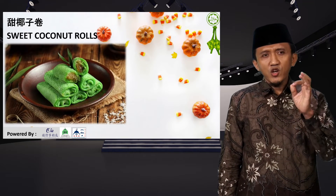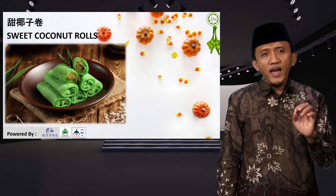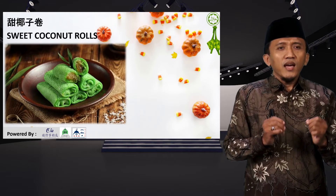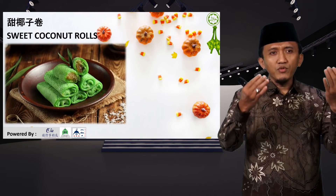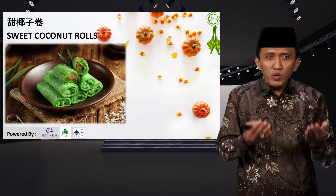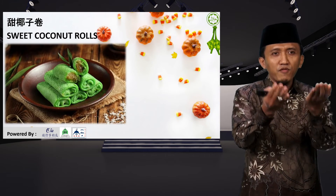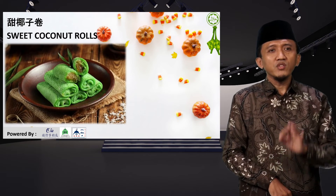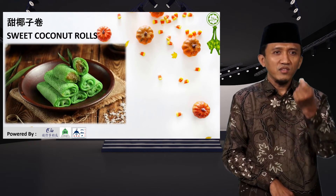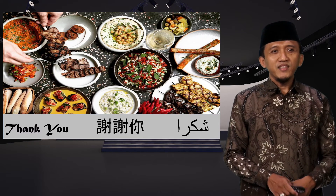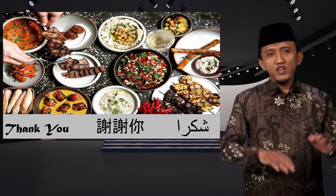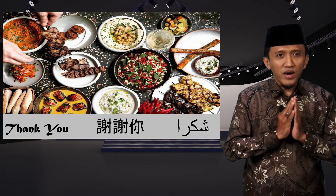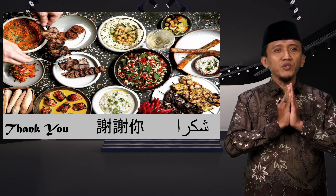The last halal food example is sweet coconut rolls, made from coconut with sugar. These cookies are prepared for Islamic celebrations or when guests visit our home. Everyone can try this — it is very tasty and delicious. That concludes my presentation. Thank you for your attention. Jazakallah, Shukran, Assalamualaikum Warahmatullahi Wabarakatuh.